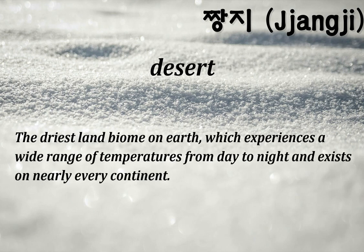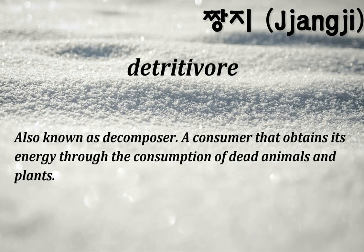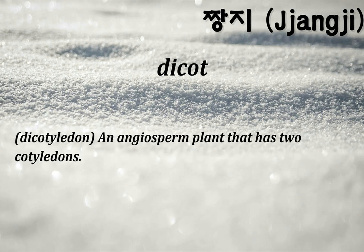Desert: the driest land biome on Earth, which experiences a wide range of temperatures from day to night and exists on nearly every continent. Detritivore: also known as decomposer — a consumer that obtains its energy through the consumption of dead animals and plants. Dicot (dicotyledon): an angiosperm plant that has two cotyledons.